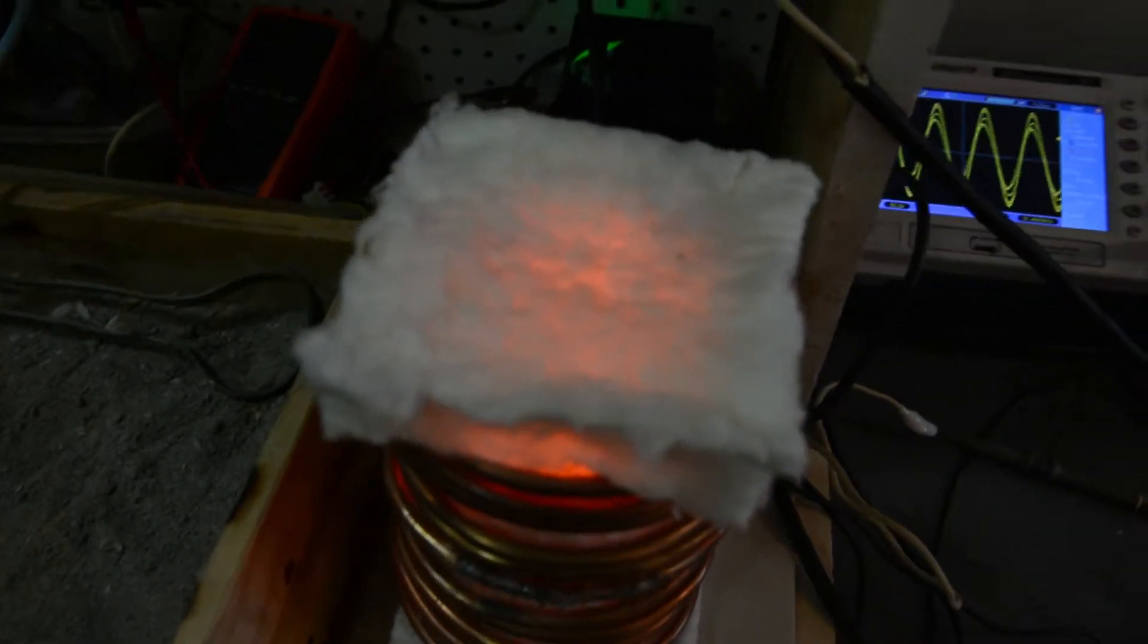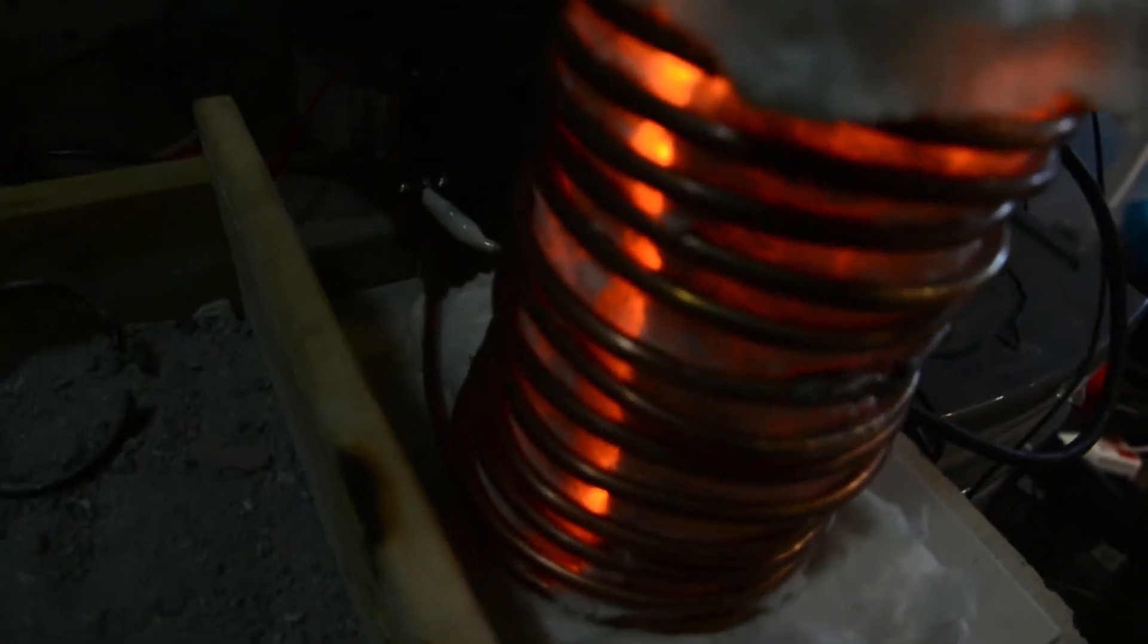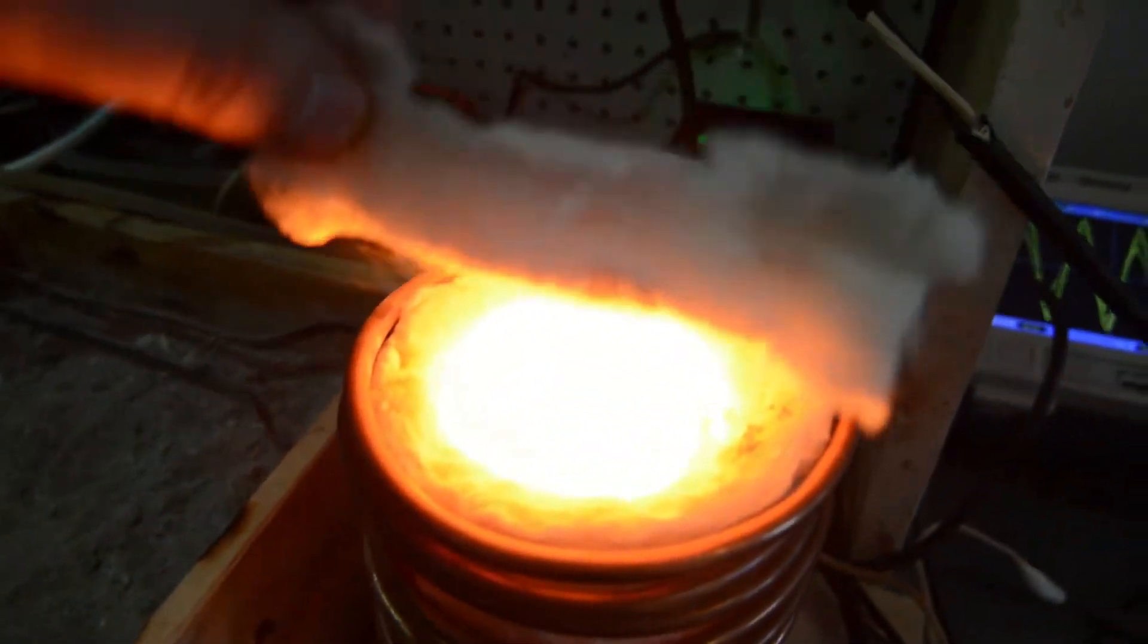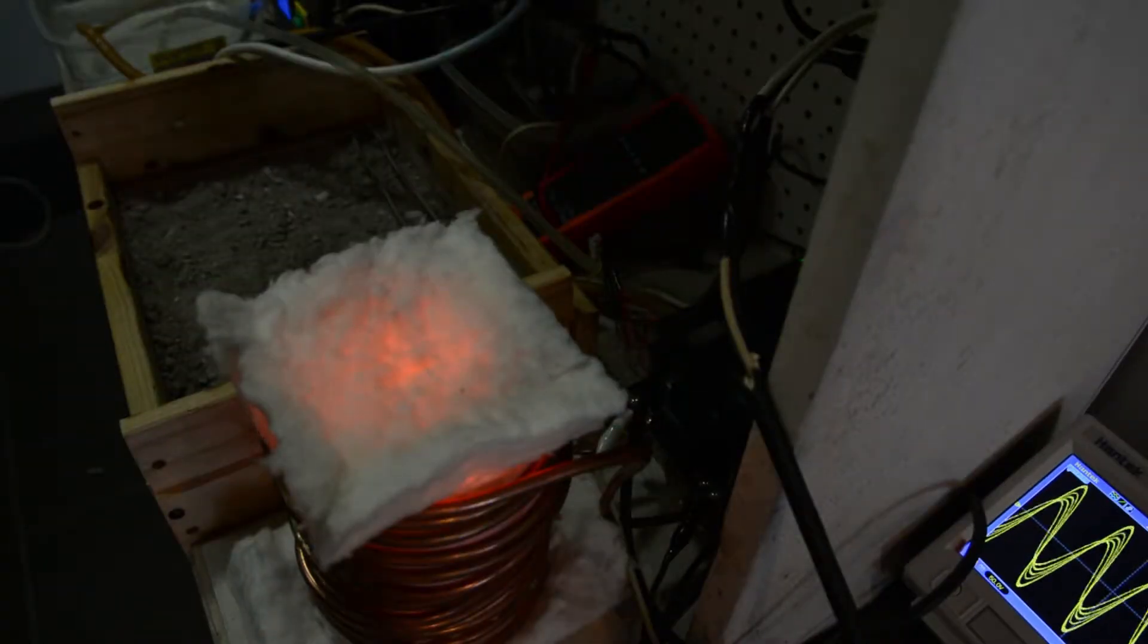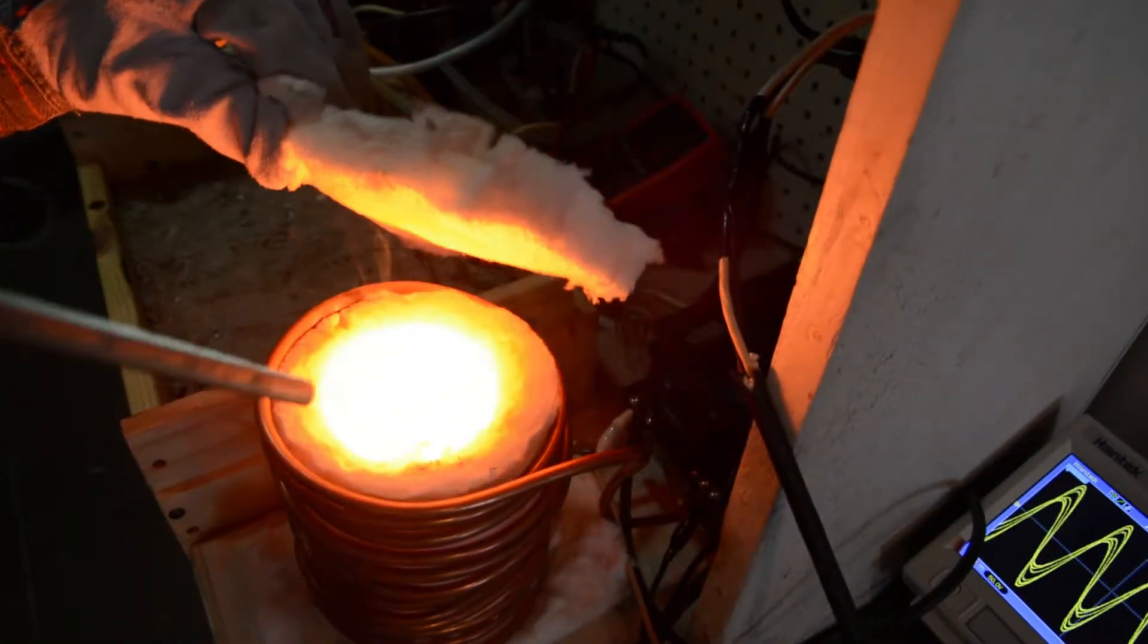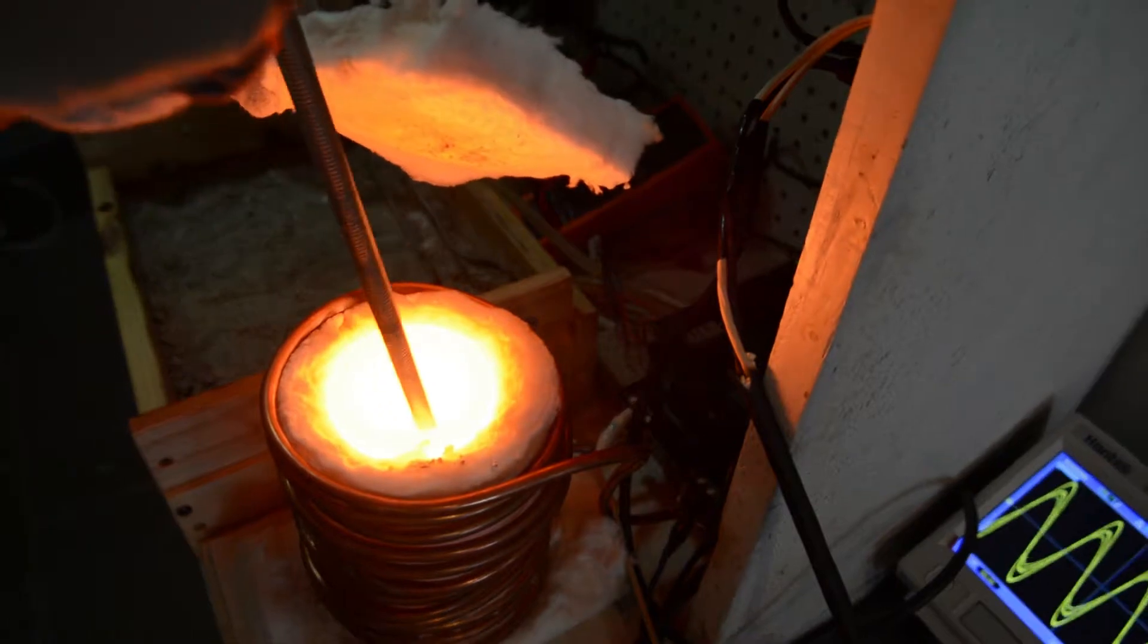When you see this kind of shining, that means that copper has melted. And you can see it through the insulation. We'll try to stir it a little bit. Let's do it.